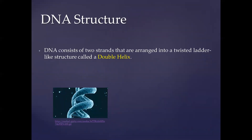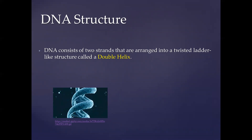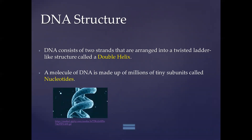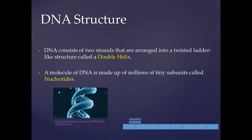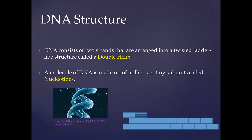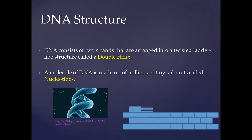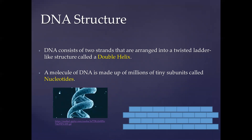Looking at the structure of DNA — it consists of two strands arranged similar to a ladder, but twisted, forming a double helix. That is the name of the structure: a double helix. It is made up of millions of tiny subunits known as nucleotides. The same way many bricks put together make up a wall, nucleotides put together make up the structure of DNA.